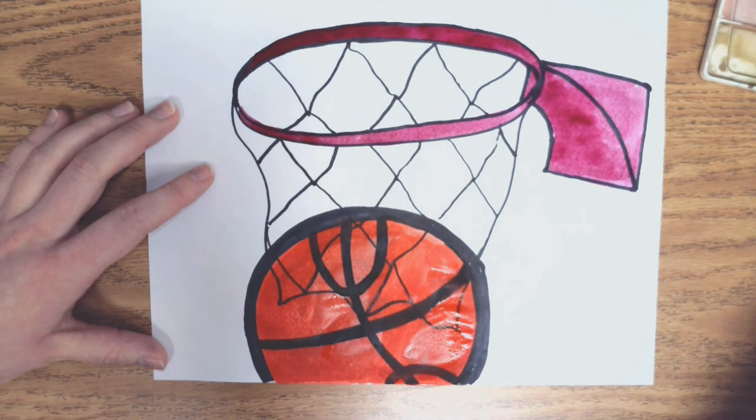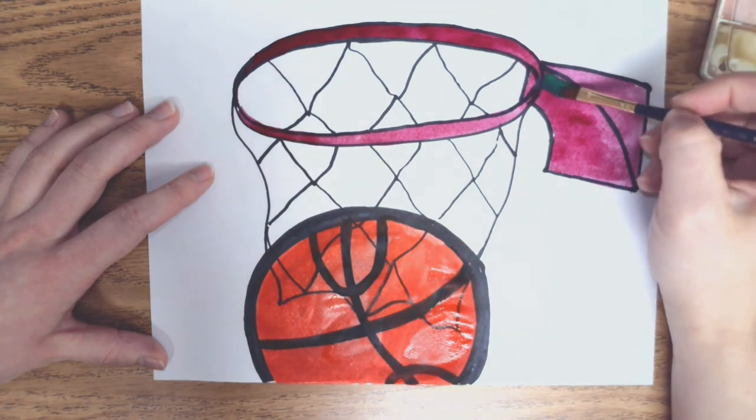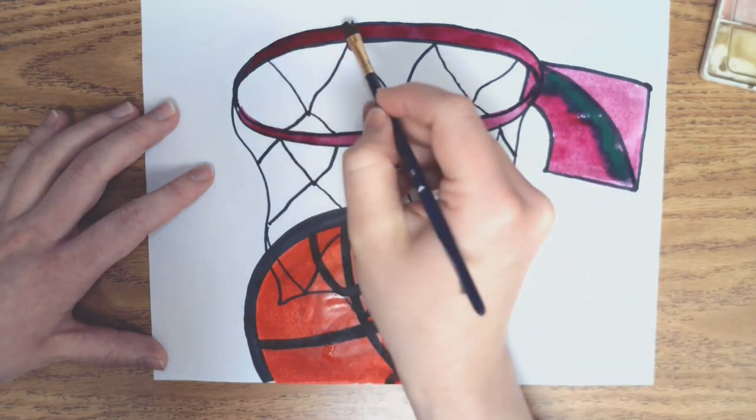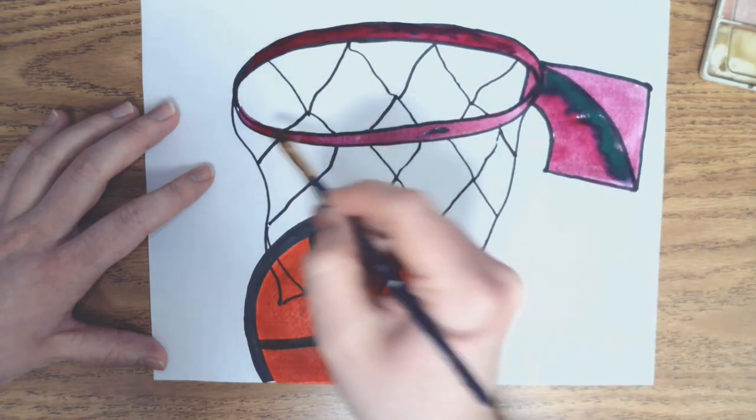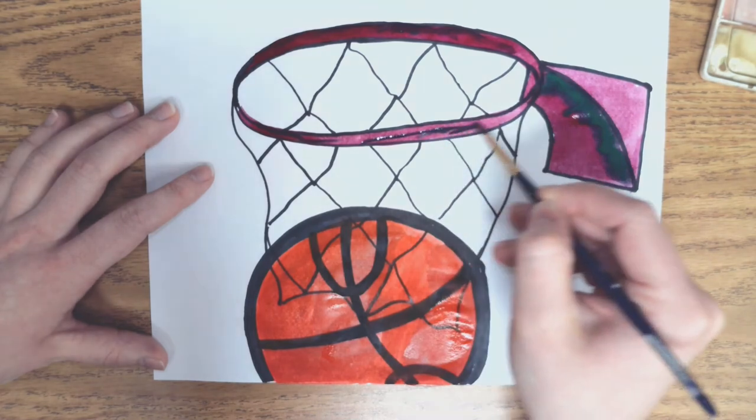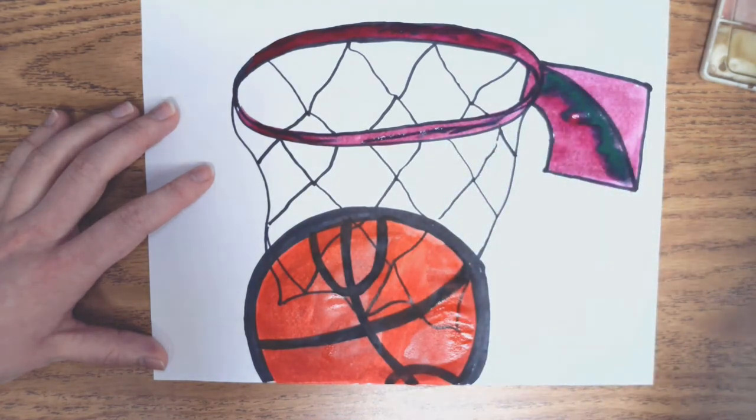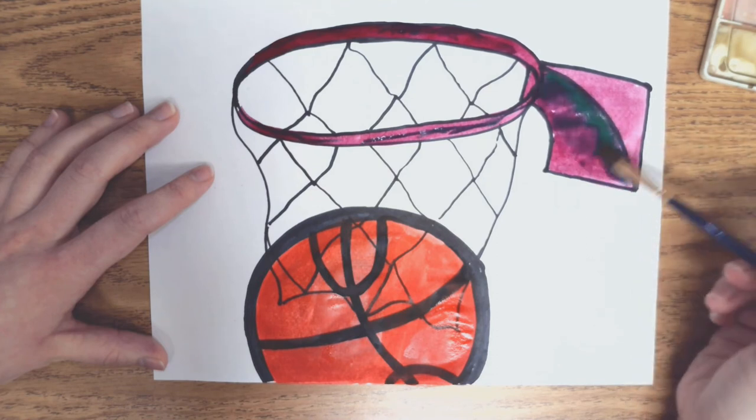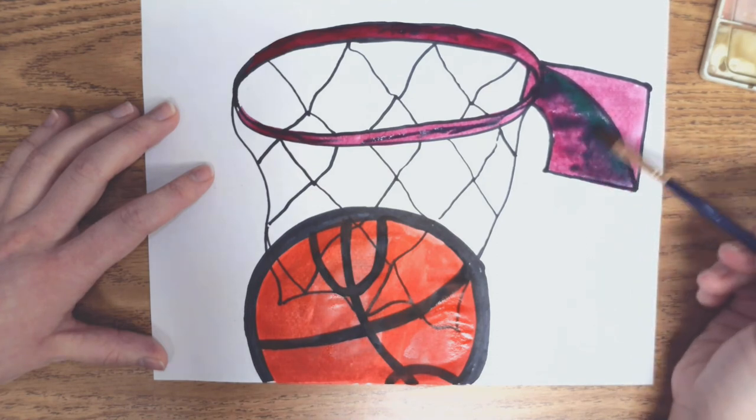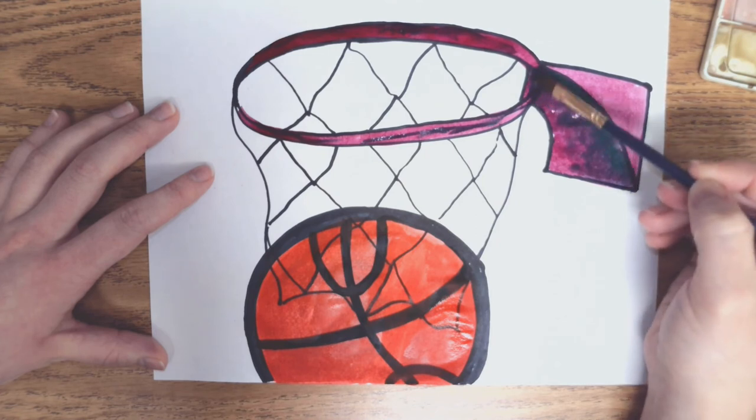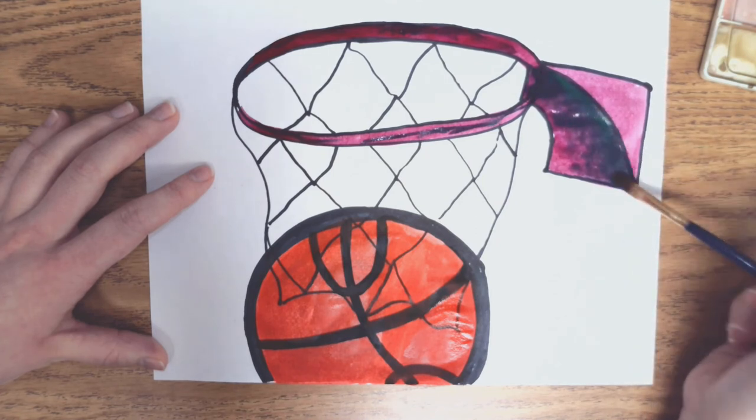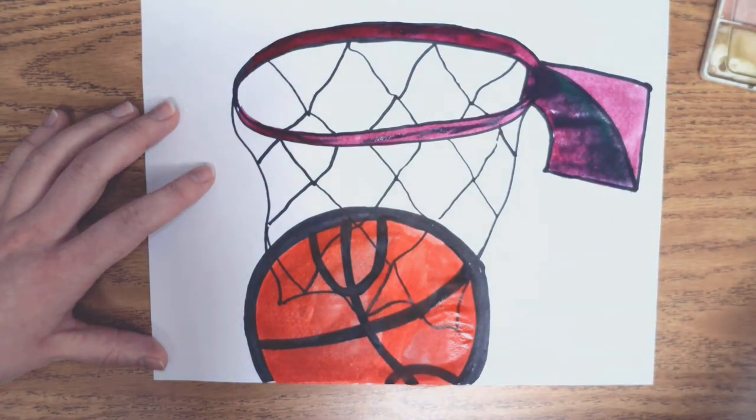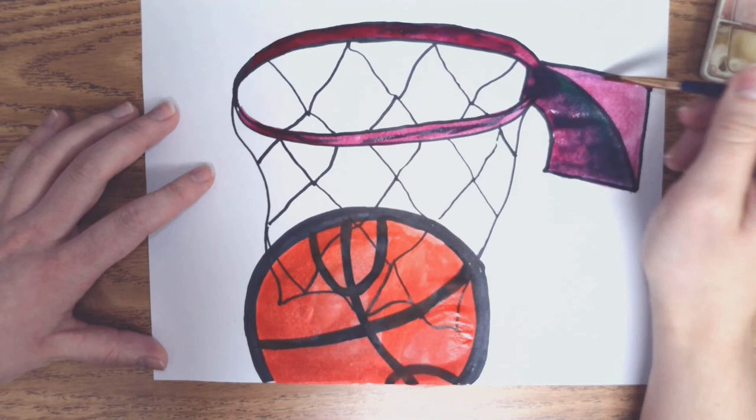Now I'm going to add just a little bit of some green and blue to add a little color and a little shadow to my hoop. Again, just adding a little color to get some more design in here and to add shadow. I'm going to use some purple instead of blue, I think.